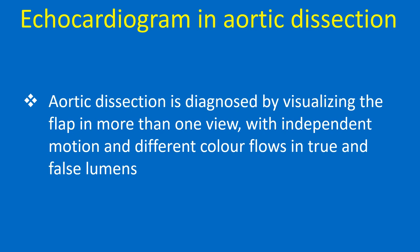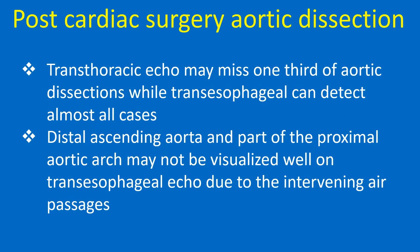Echocardiogram in aortic dissection: aortic dissection is diagnosed by visualizing the flap in more than one view with independent motion and different color flows in true and false lumens. Transthoracic echo may miss one third of aortic dissections, while transesophageal echo can detect almost all cases. However, the distal ascending aorta and part of the proximal aortic arch may not be visualized well on transesophageal echo due to intervening air passages.